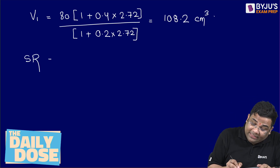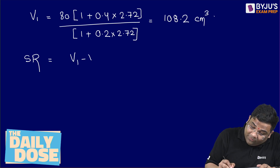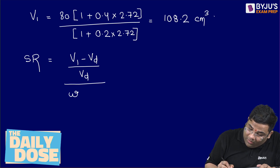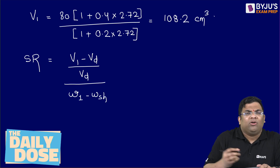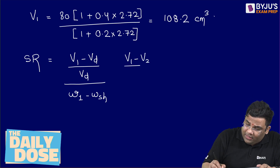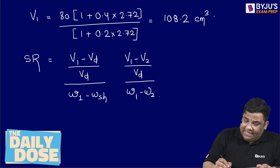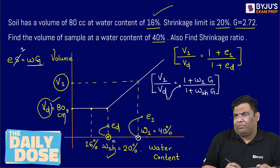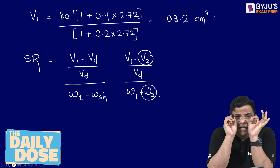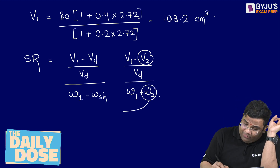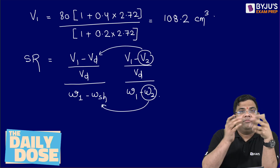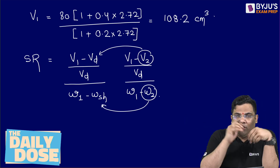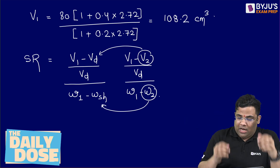The second part is to find the shrinkage ratio. The shrinkage ratio formula is: V1 minus VD, divided by VD, further divided by W1 minus WSH. The original formula uses V1 minus V2 over VD, divided by W1 minus W2. When the second condition is the shrinkage limit, we substitute WSH for W2 and the dry volume VD for V2, because at the shrinkage limit the volume equals the dry volume.